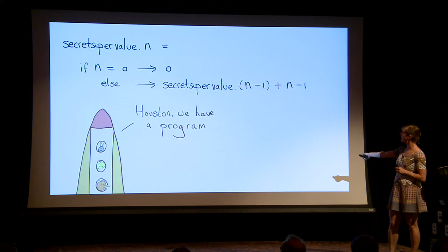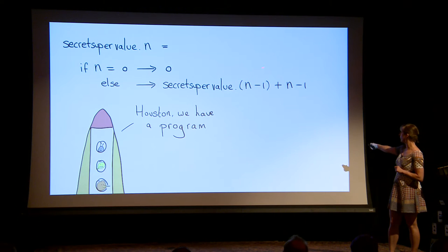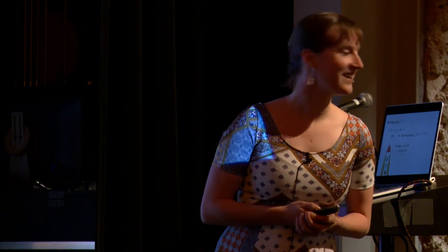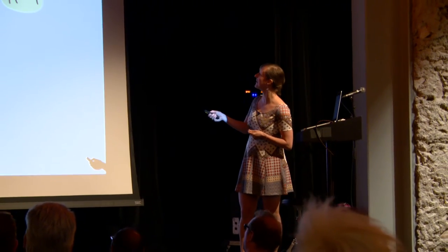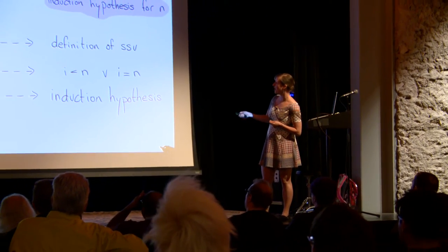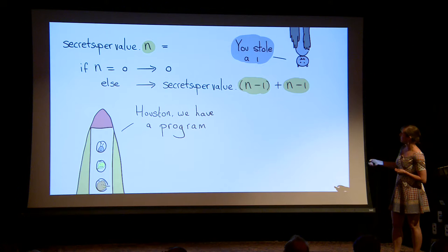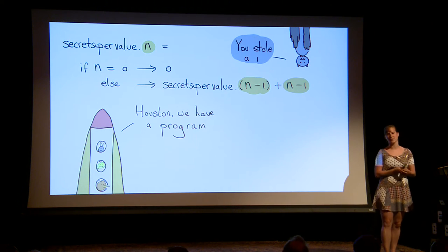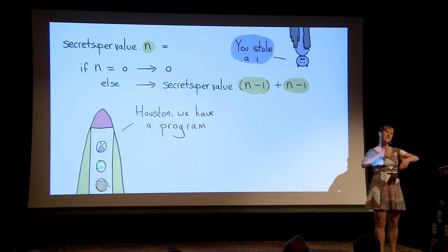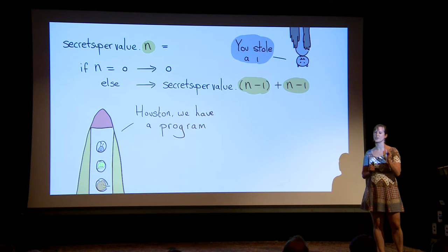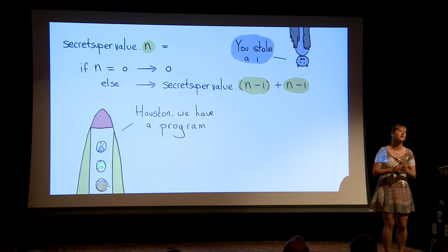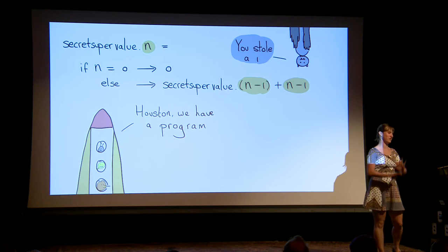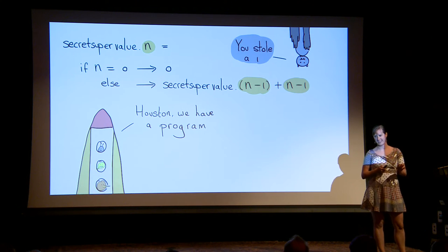Anyone see anything strange about this program? I secretly stole a 1 here. Because if we go back to my derivation, I'm deriving n plus 1 is the super value of n plus n, and here I'm calling it with n. That's because most programming languages don't like it if you define a function with a variable in the signature. So I secretly used a technique called dummy transformation. I'm just hoping you trust that I didn't do anything secretly mean there.